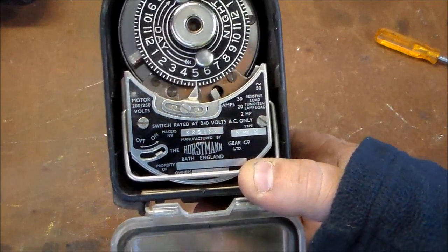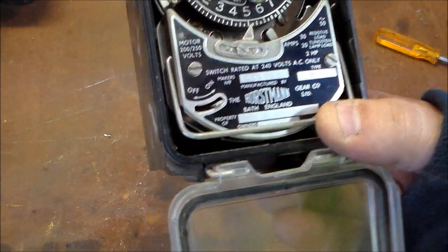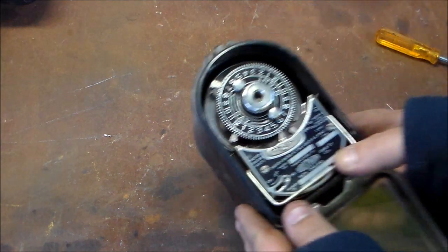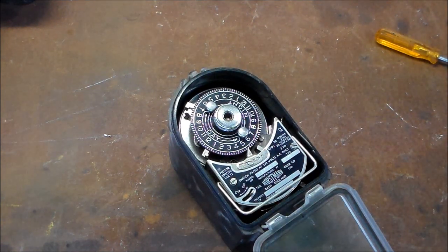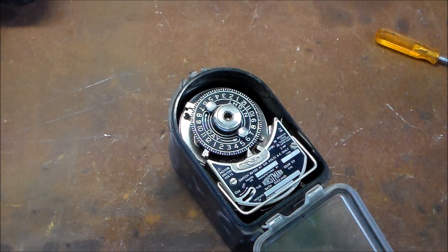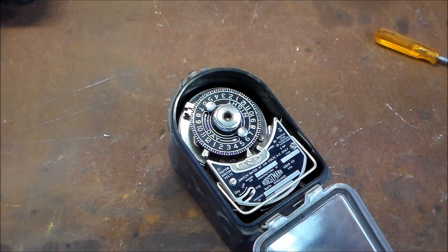It's a Horstmann made in Bath, England. Maker's number K25128, type KMK2. Motor rated 200-250 volts, resistive load 30 amps, tungsten lamp load 20 amps, 2 horsepower. Very nice.